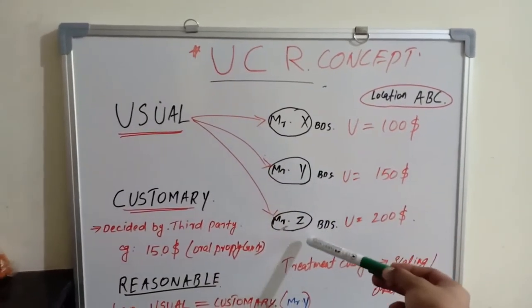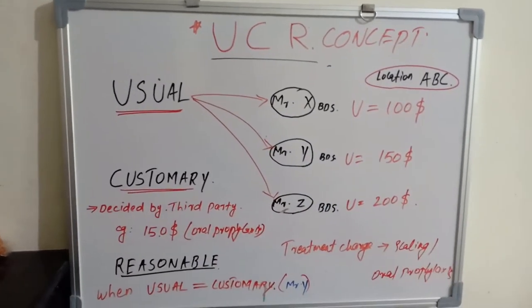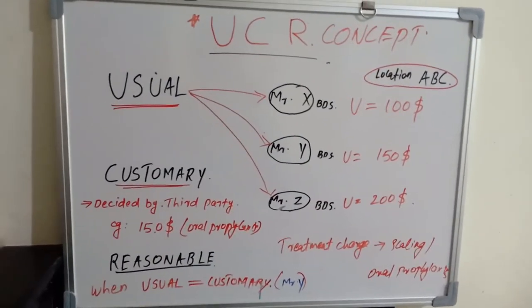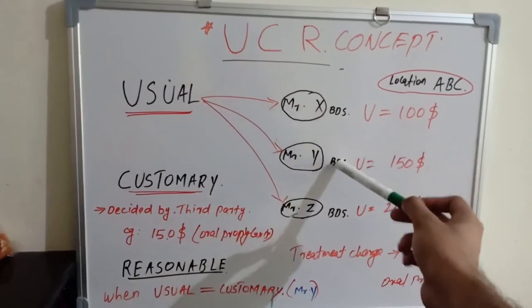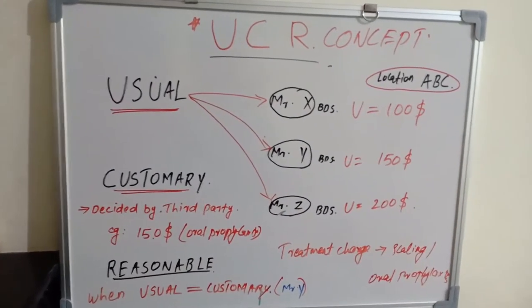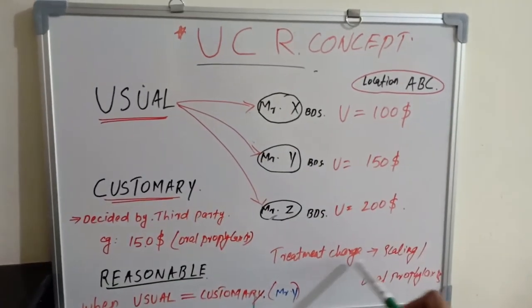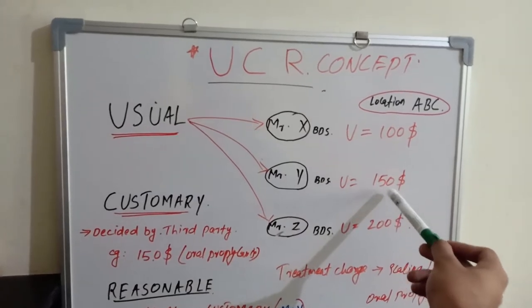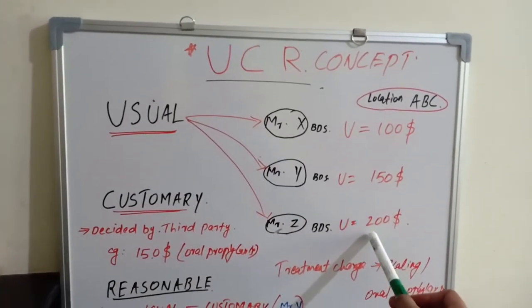Mr. X, Mr. Y, and Mr. Z are practicing at location ABC. All have the same qualification - BDS. They are charging for scaling or prophylaxis: Mr. X charges $100, Mr. Y charges $150...